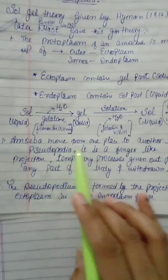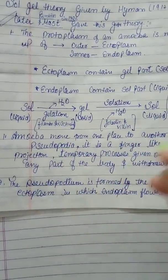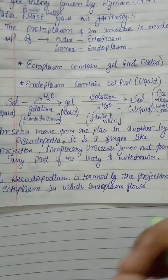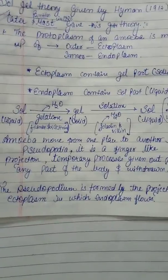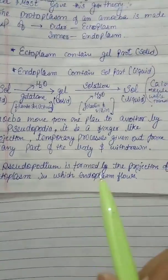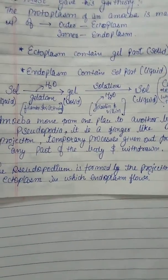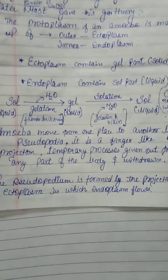Amoeba moves from one place to another via pseudopodia. Pseudopodia are finger-like projections — temporary processes given from any part of the body. Pseudopodia can be projected from any part of the body of amoeba and are in the form of a projection in the ectoplasm. Pseudopodia basically form in the outer ectoplasm part, and there is a flow of endoplasm into the ectoplasm because of which pseudopodia are formed.